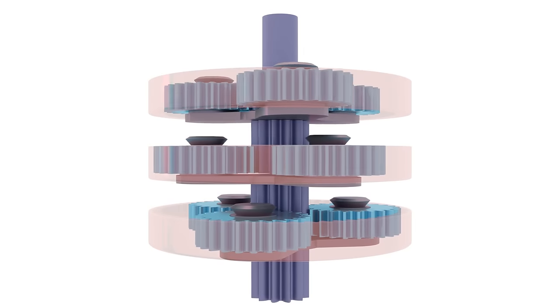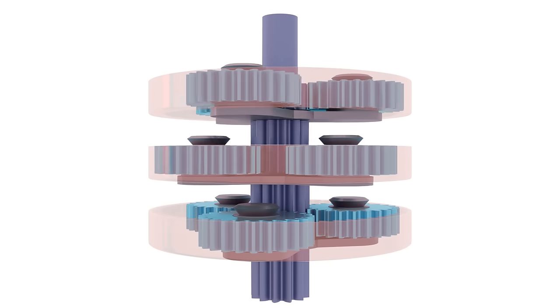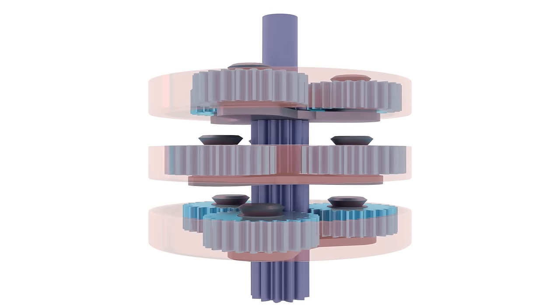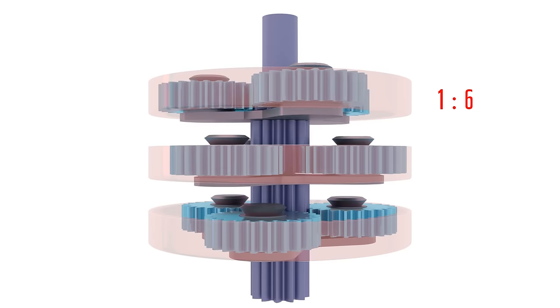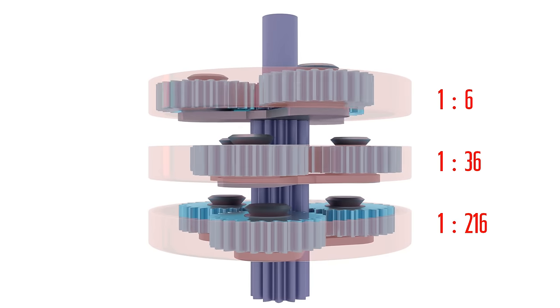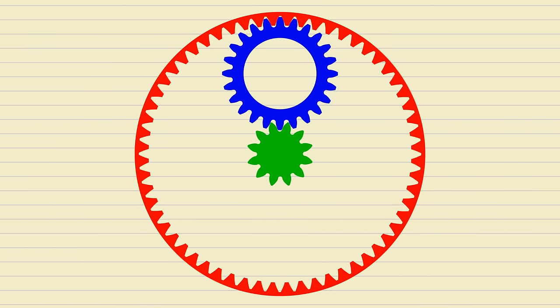Multiple planetary mechanisms can be stacked to form a compound drive, producing a very high overall gear ratio. In this tutorial, we will be designing the planetary gear system shown here by first designing the ring and planet gears, and then the sun gear separately.